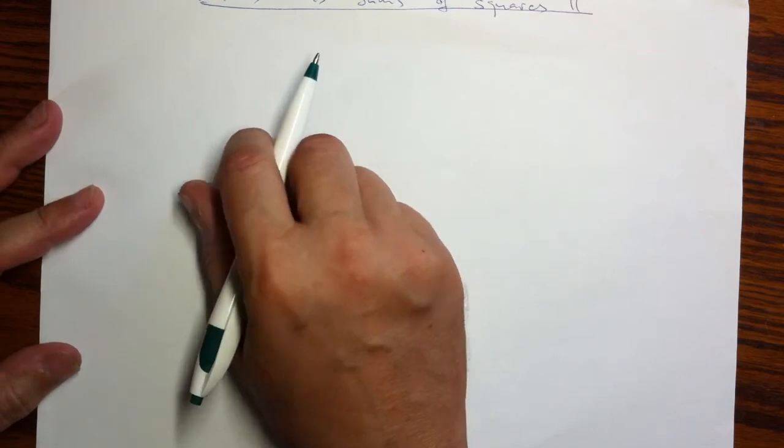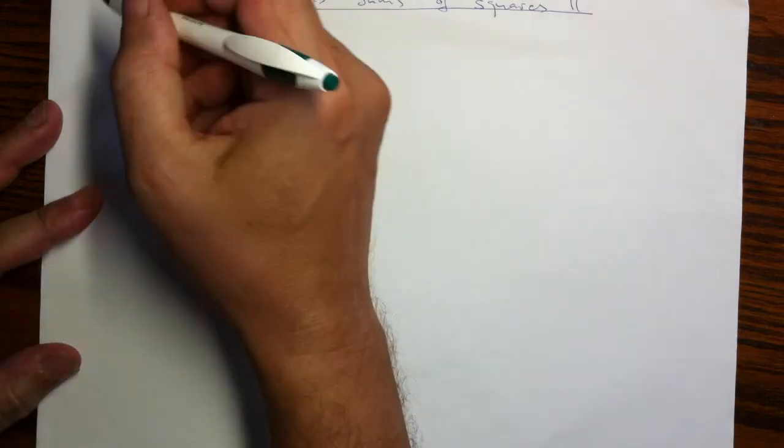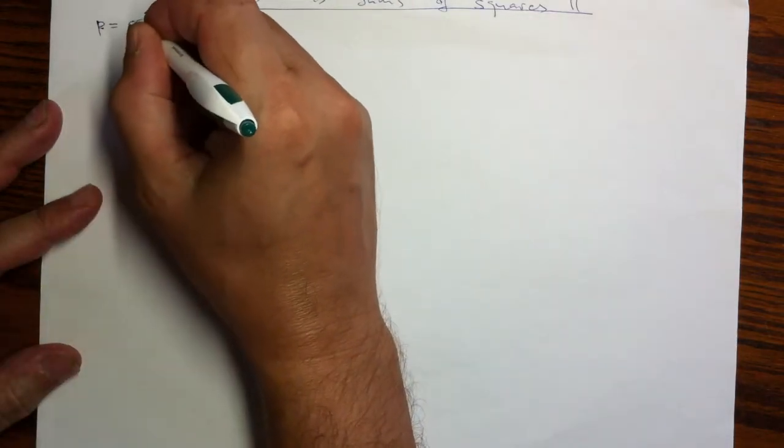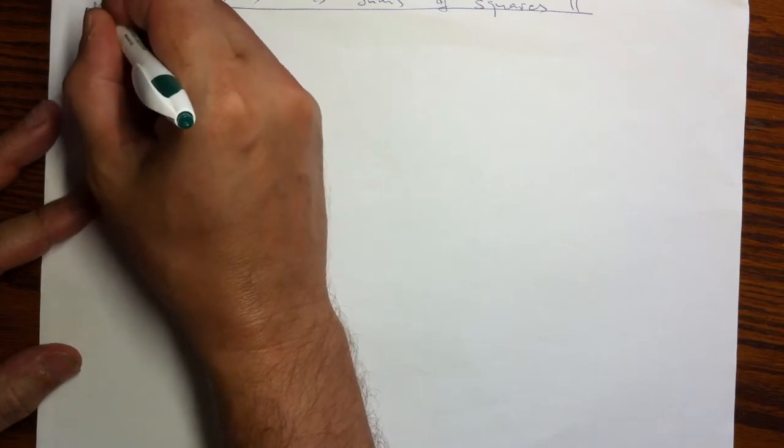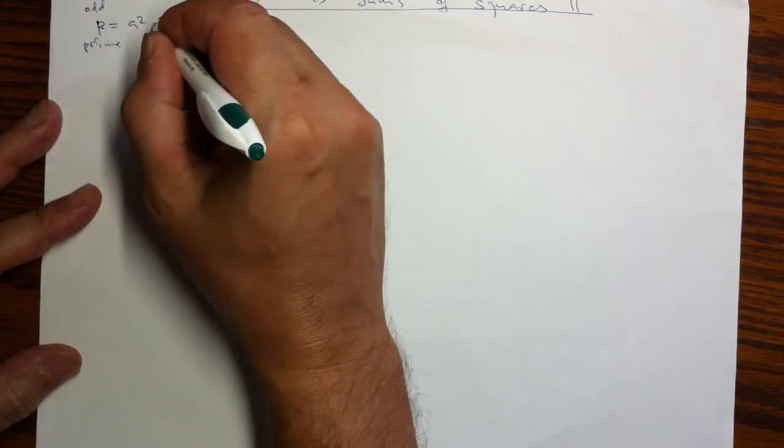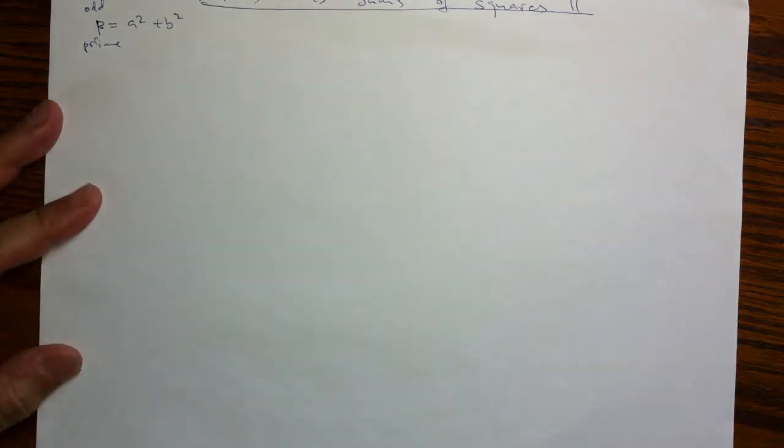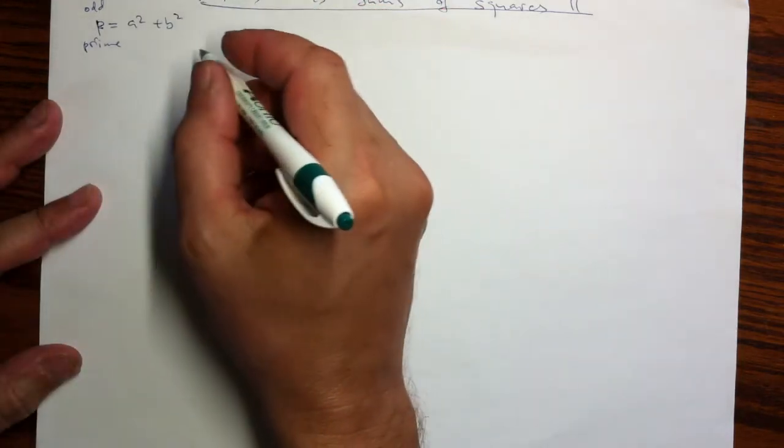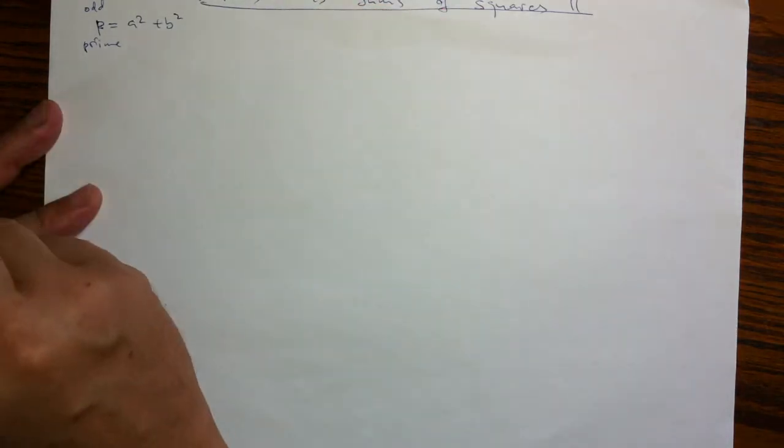So, the conjecture or criterion is that it is possible for a non-trivial prime to be written as a sum of two squares if and only if it is congruent to 1 mod 4.